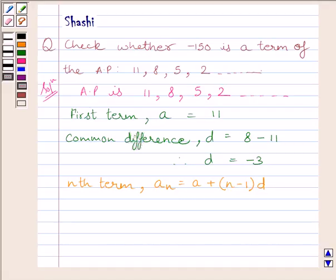Now we have to check if minus 150 is a term of AP 11, 8, 5, 2. Now let us assume that Nth term of the given AP is equal to minus 150. Now let us name this expression as equation 1.